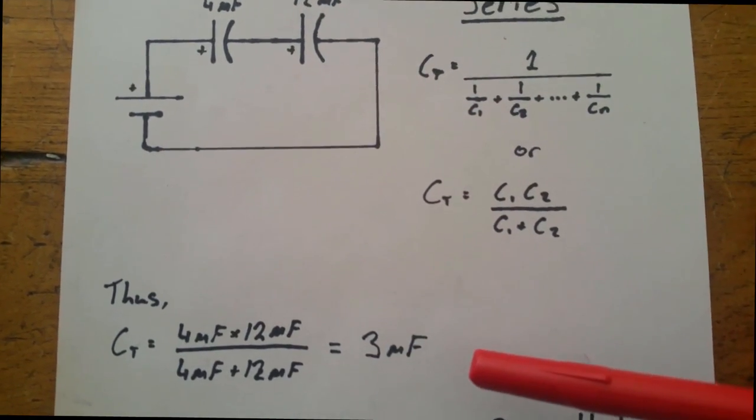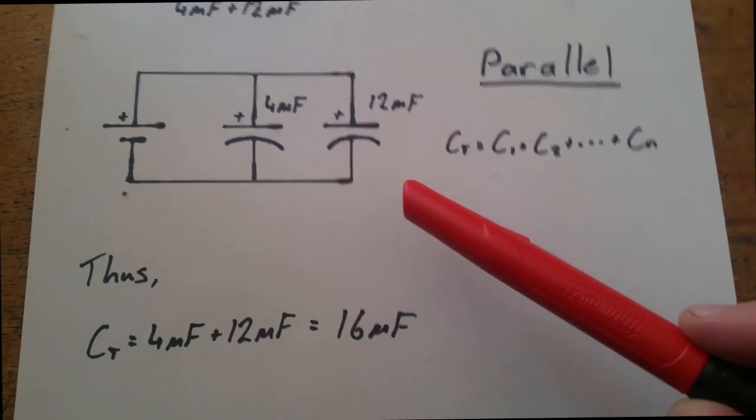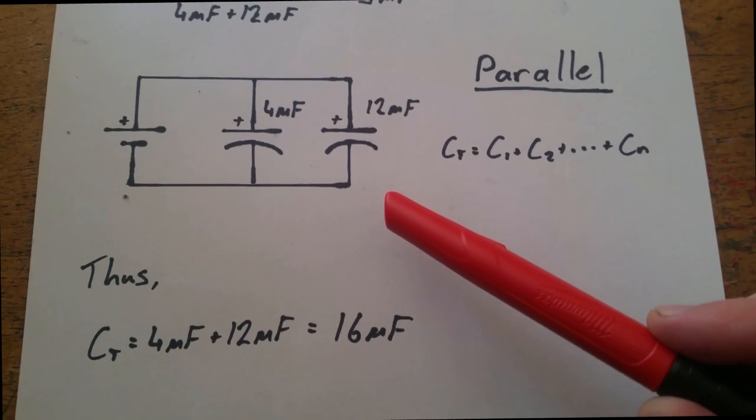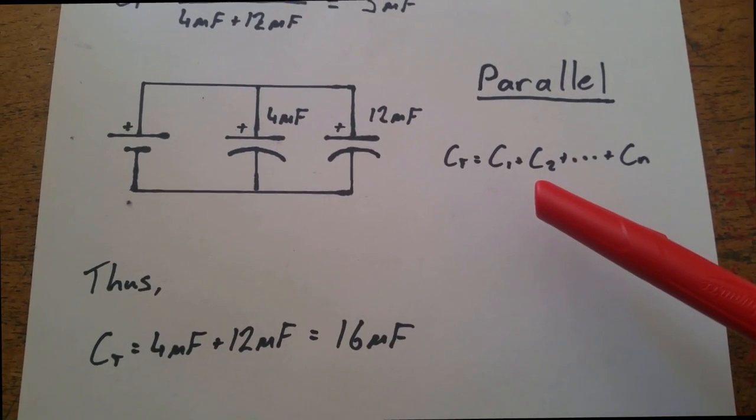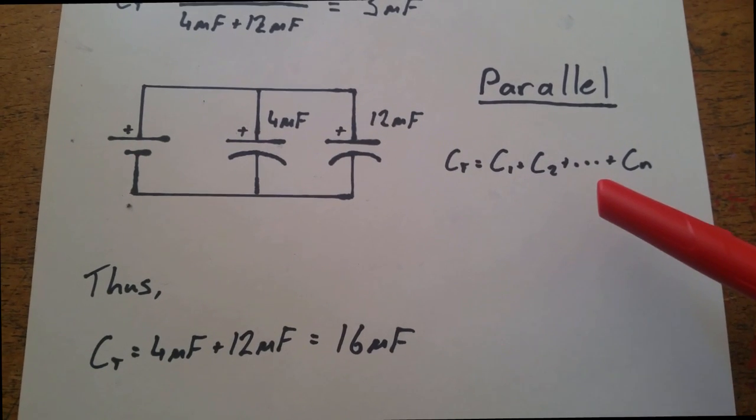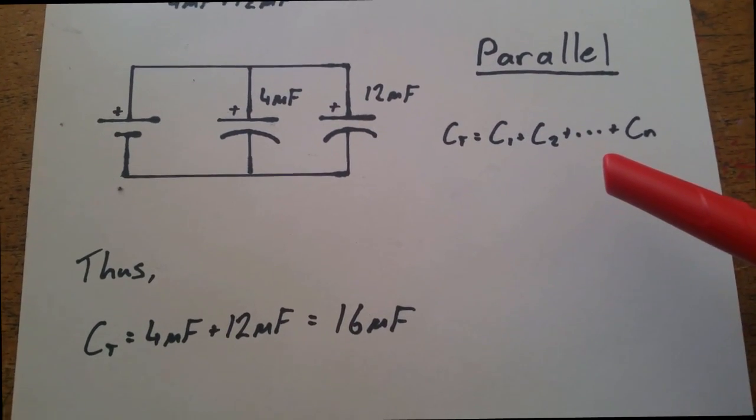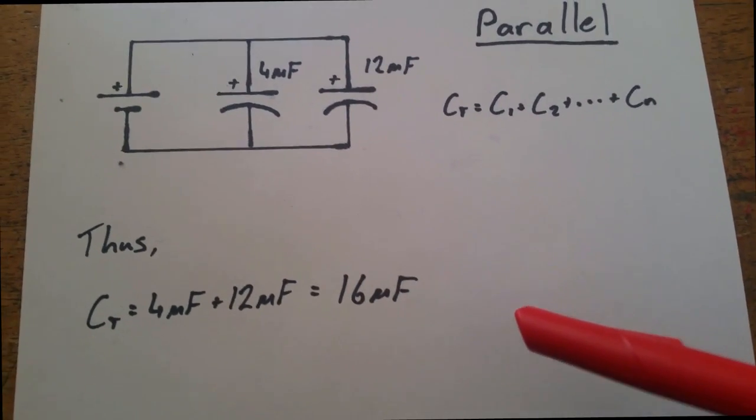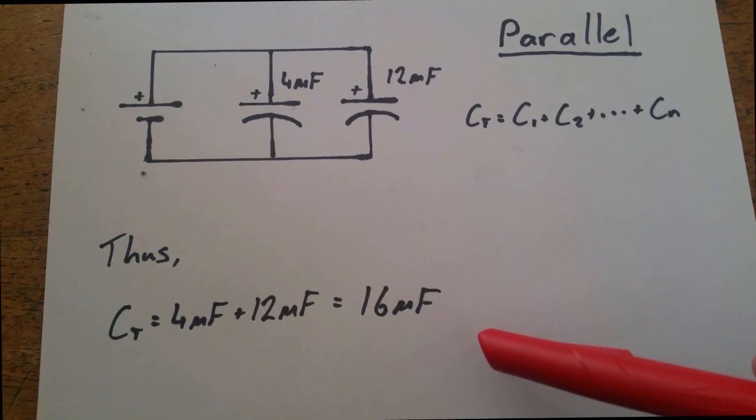In a parallel configuration of capacitors, the total capacitance is found via the addition of any number of capacitors of any capacity. Thus, we can find the total capacitance of this setup here to be 16 microfarads.